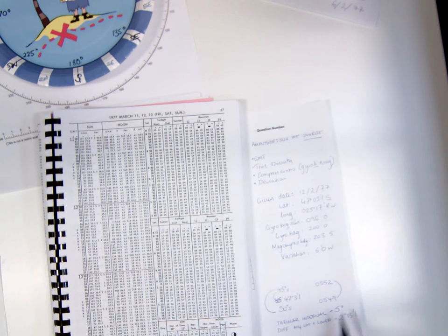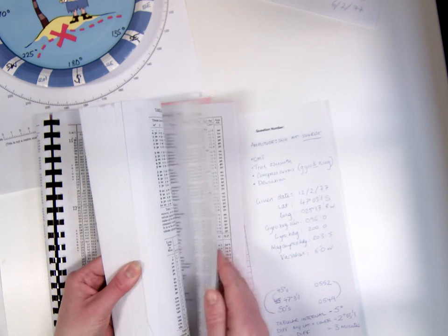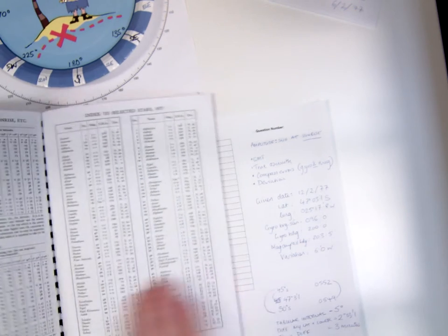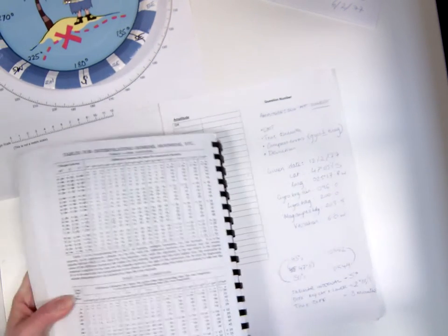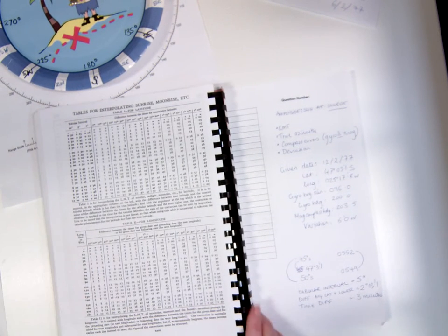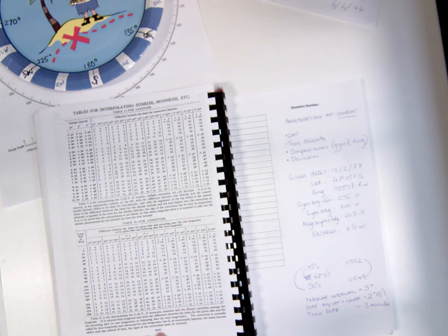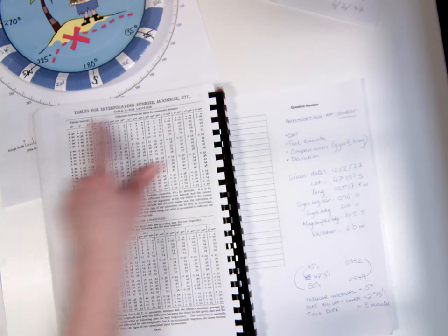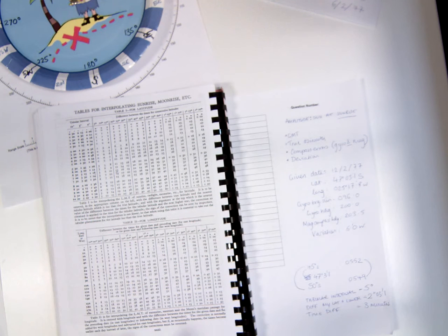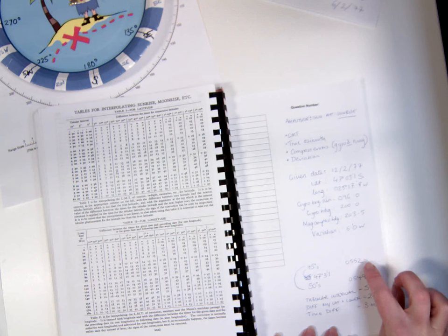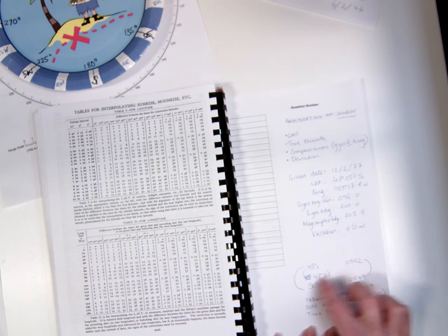The final item that we need here is the difference in time. So here from 5:49 to 5:52, we've got a 3 minute difference. Armed with all this information, I'm going to turn to the back of the Almanac. You're looking at page 32 at the back of the Almanac. This table is going to be used to find the difference between the LMT at 45 degrees south and the LMT for our latitude.